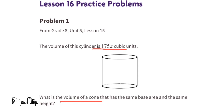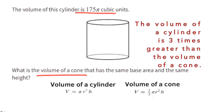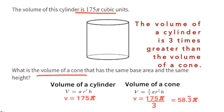a cone that has the same base area and the same height? The volume of a cylinder is three times greater than the volume of a cone. The volume of the cylinder is 175 pi, so the volume of the cone will be three times smaller: 175 times pi divided by 3 equals 58 and 1/3 times pi.